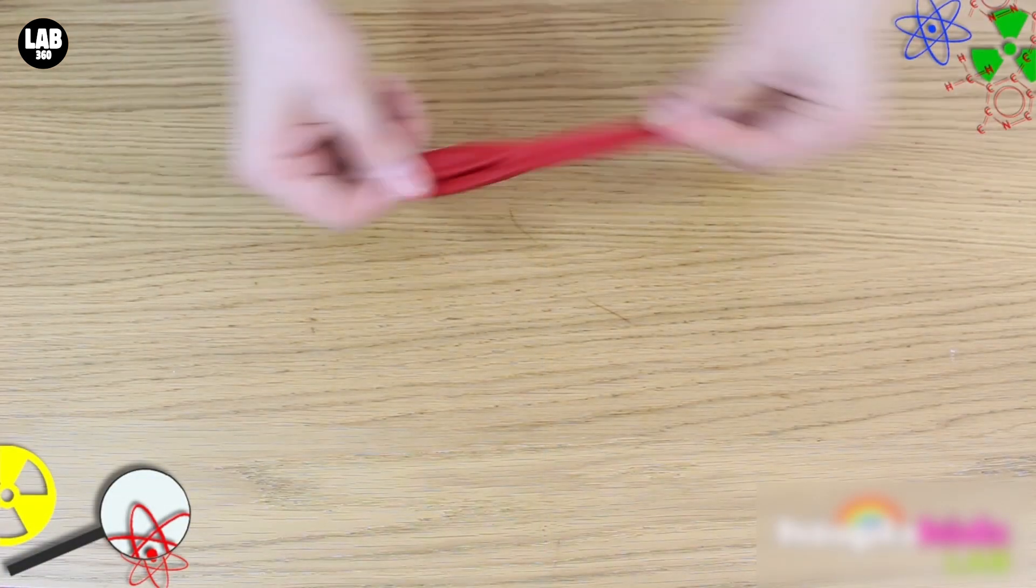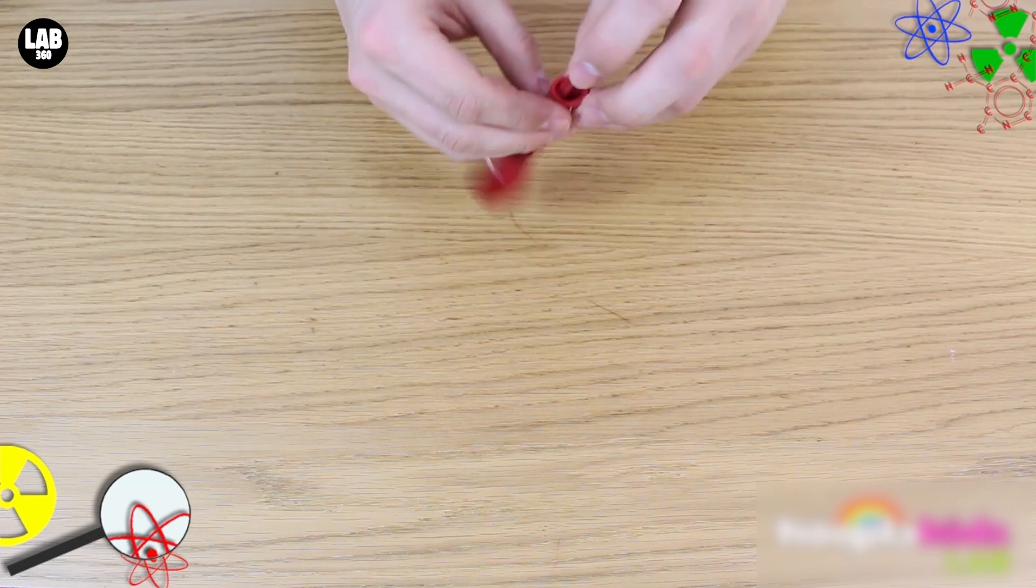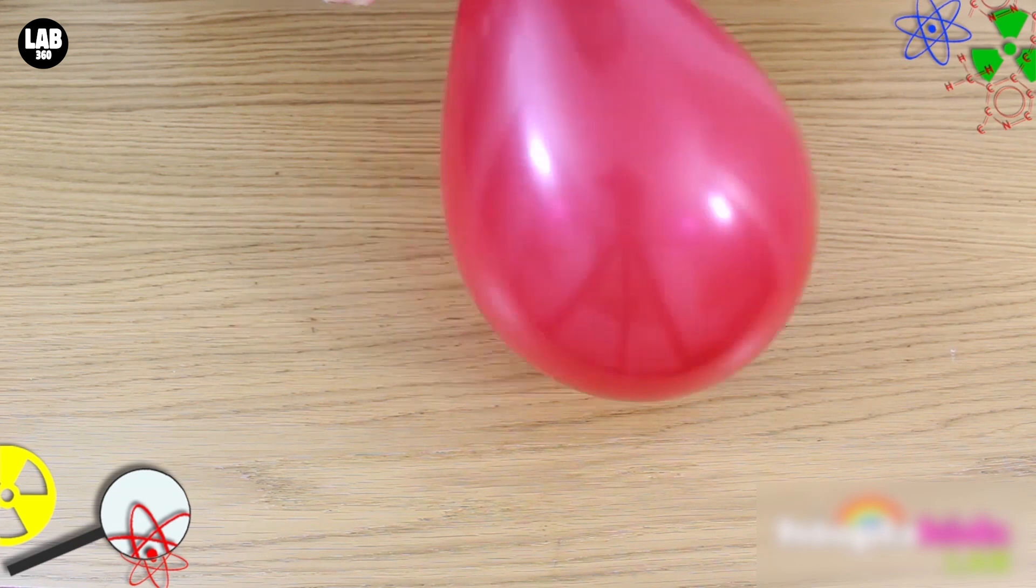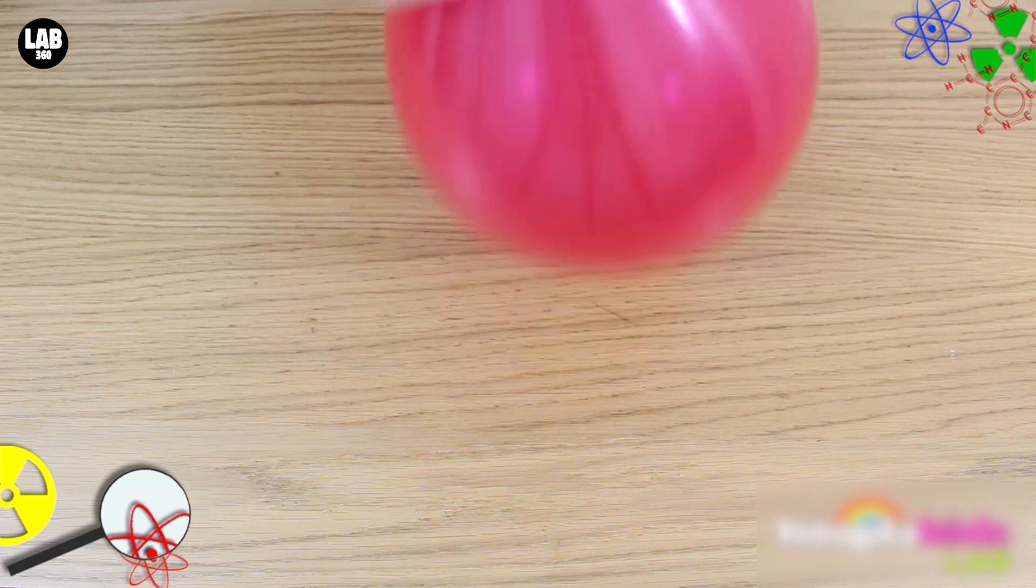All you need to do is stretch out the balloon a little bit, and then blow it up just as you would normally. Once you've blown it up, very carefully tie one end off, or have a parent do it for you.